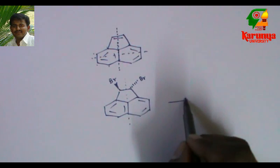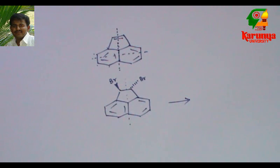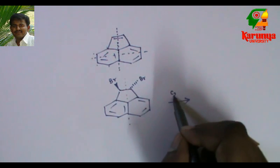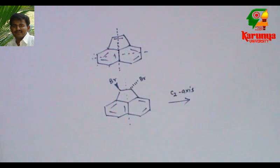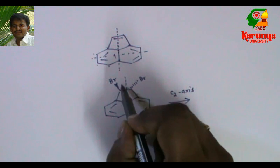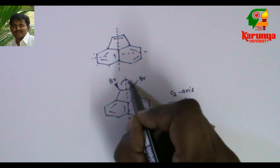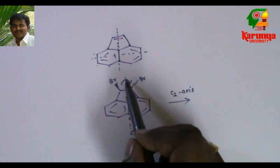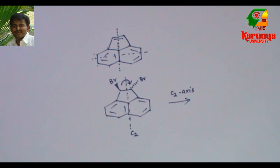Not only mirror plane, if it has C2 axis of symmetry, then also you have to break there. For example, this molecule has C2 axis of symmetry. If I rotate through this axis by 180 degrees, I will get the same molecule. Then also you have to break the molecule across that line, across that axis.